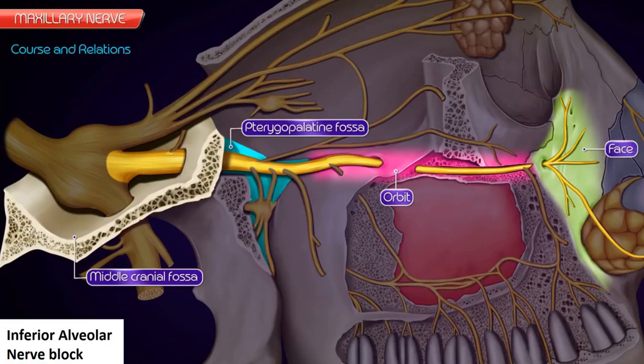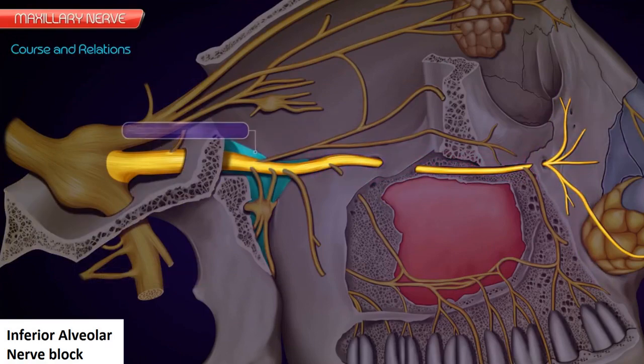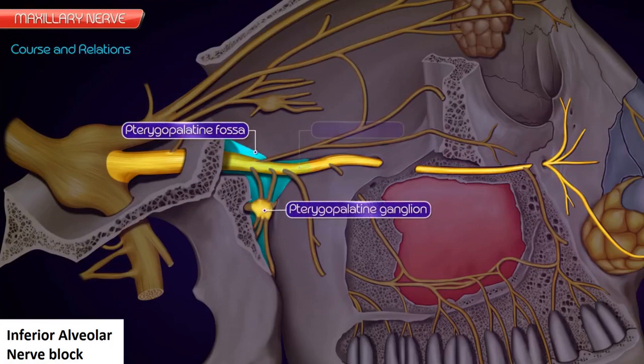An important point to be noted here is that in the pterygopalatine fossa, the pterygopalatine ganglion is suspended from the maxillary nerve by two roots.